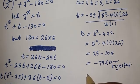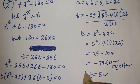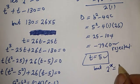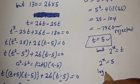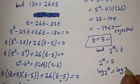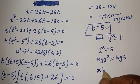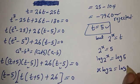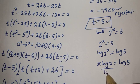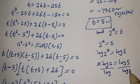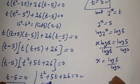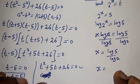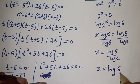The only real solution is t equals 5. Since 2 raised to power s equals t, then 2 raised to power s equals 5. Taking the log of both sides: log of 2 raised to power s equals log 5, so s times log 2 equals log 5. Dividing both sides by log 2, s equals log 5 over log 2, which equals log base 2 of 5.